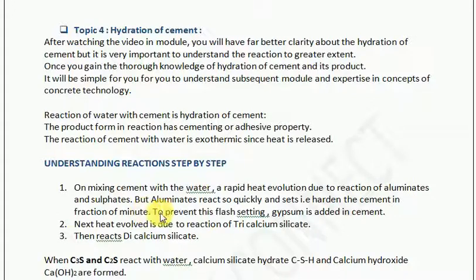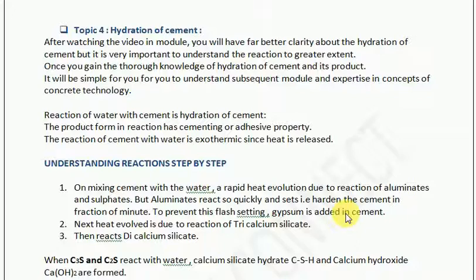What is that chemical? To prevent this flash setting, gypsum is added to the cement. When gypsum is added, it immediately prevents the initial reaction of aluminate. This immediate reaction of aluminate is prevented by gypsum. Already in the manufacturing process we know that gypsum is added during manufacturing, and now we understand why it is added.